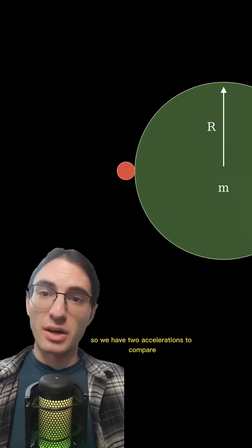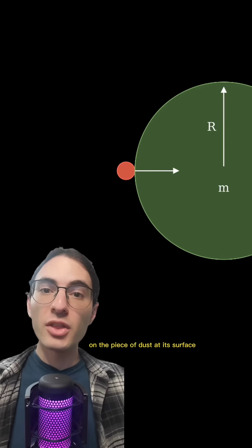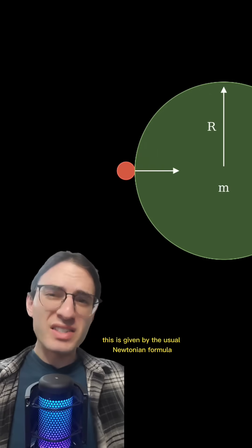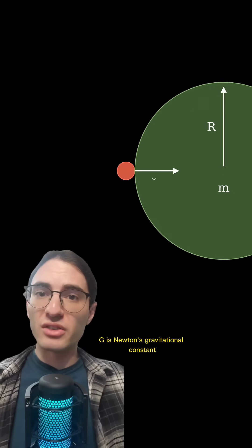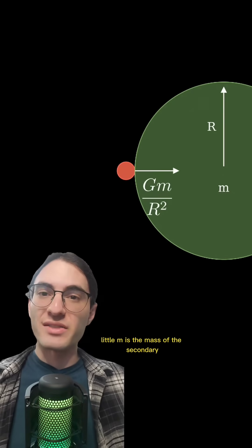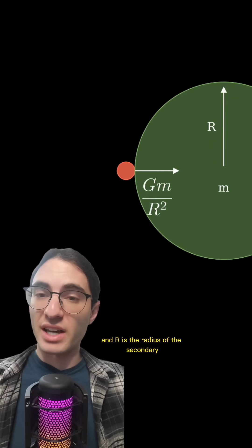So we have two accelerations to compare. First is the gravitational pull from the secondary on the piece of dust at its surface. This is given by the usual Newtonian formula. G is Newton's gravitational constant, little m is the mass of the secondary, and r is the radius of the secondary. Next, we need to know the tidal acceleration on the piece of dust.